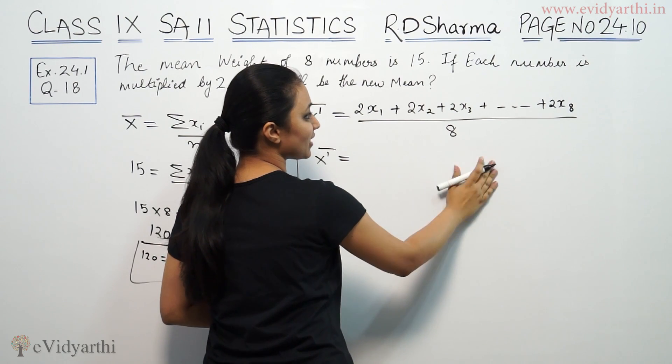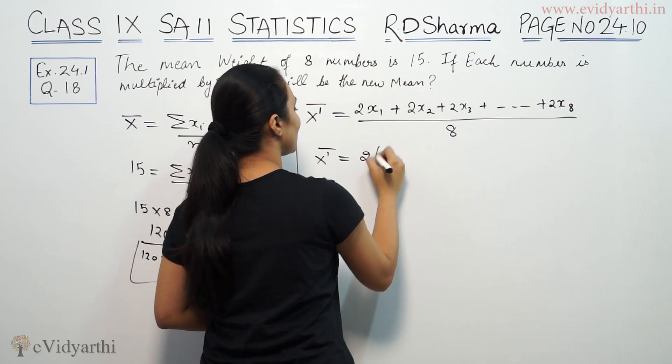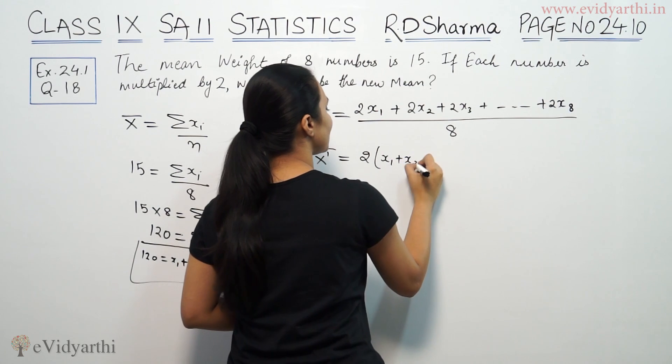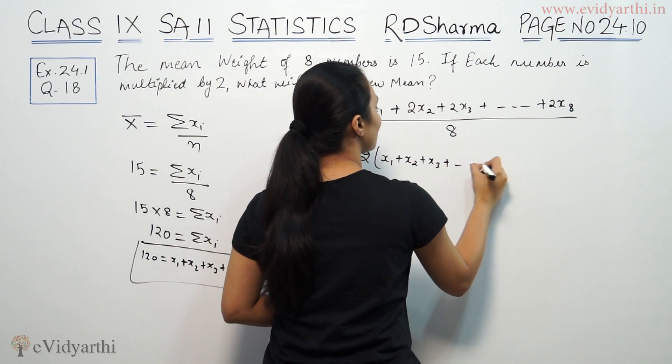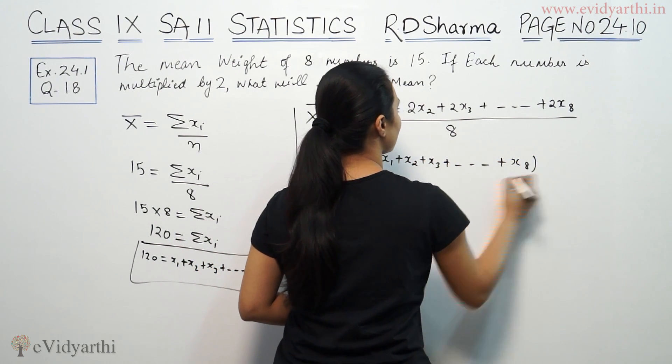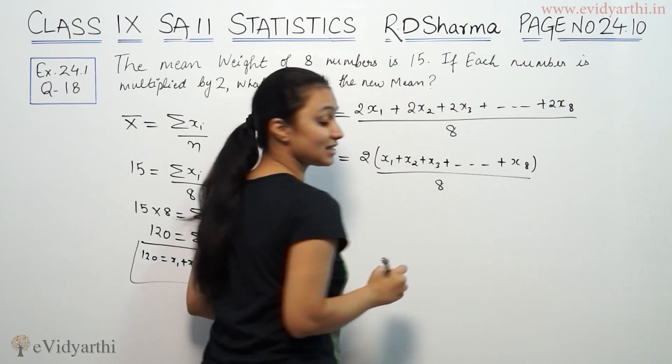Here, x1, x2, x3 are all common. So, we can take 2 common: 2 times (x1 plus x2 plus x3 plus dot dot dot plus x8) by 8.